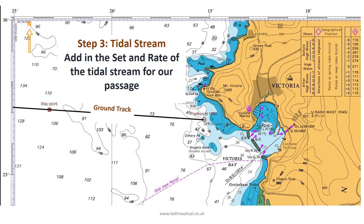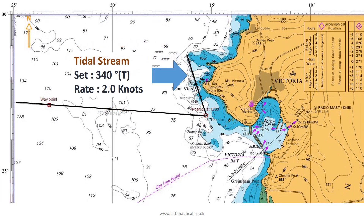Step 3 is to add in the set and rate of the tidal stream for our passage. In this example the set of the tidal stream is 340 degrees true and the rate is 2 knots.